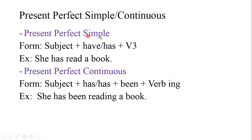Present perfect simple form: subject plus have/has plus verb 3. Verb 3 here means past participle. Example: 'She has read a book.' Here, 'read' is verb 3 — past participle. You don't say 'read' like the present; you say 'read' as the past participle, because this is verb 3.